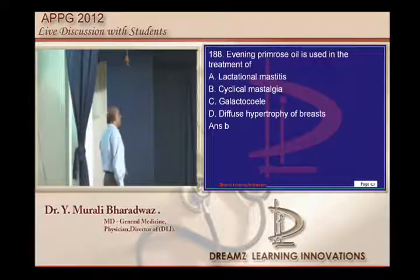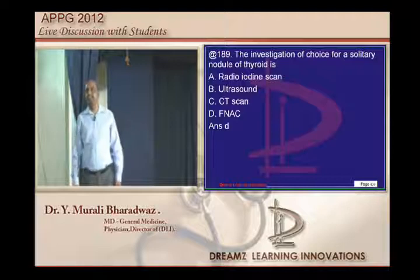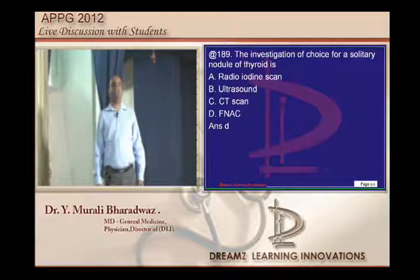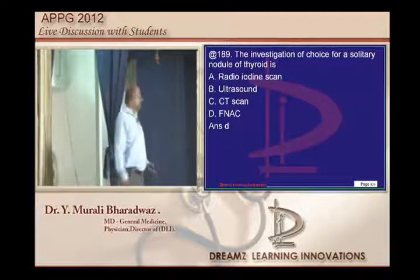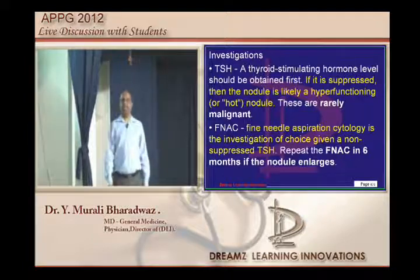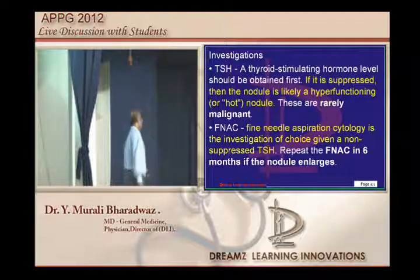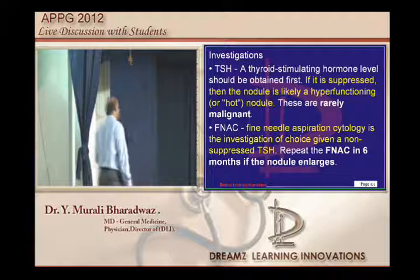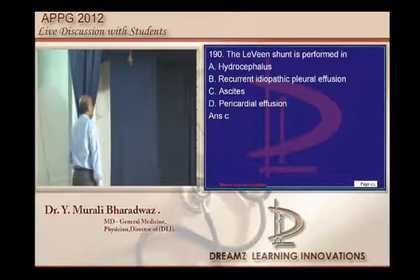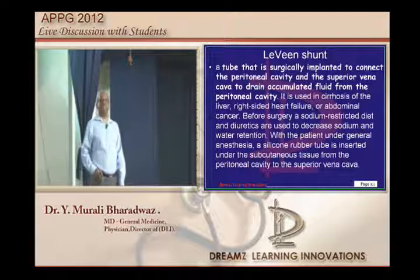Evening primrose is used for cyclical mastalgia — everybody knows it. For a solitary thyroid nodule, we initially do TSH; if suppressed, the nodule is hyperfunctioning and more likely benign. FNAC is the investigation of choice for a non-suppressed thyroid nodule. The Levin shunt connects the peritoneal cavity to the superior vena cava to drain refractory ascites.